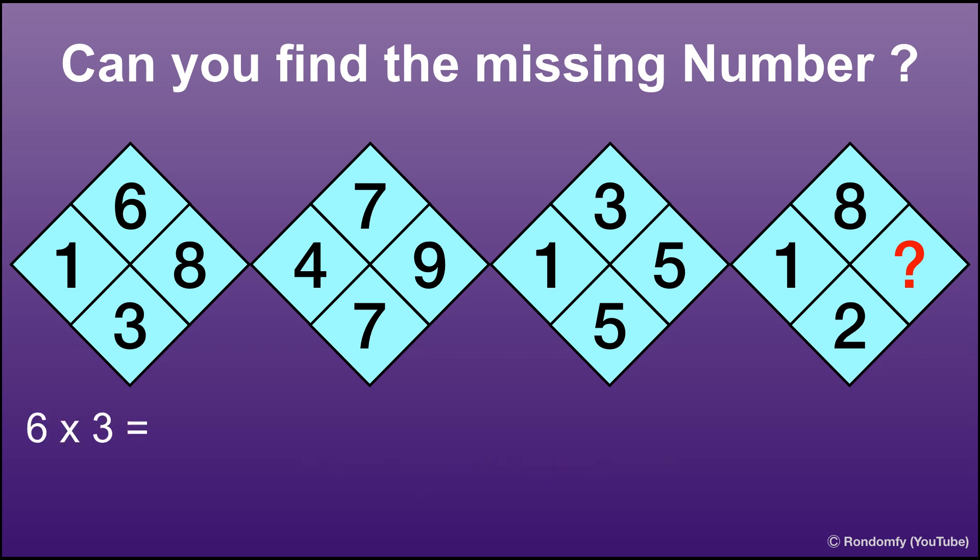In each rhombus, when you multiply the top number with the bottom number, you get the numbers for left and right spaces. So 7 into 7 equals 49.